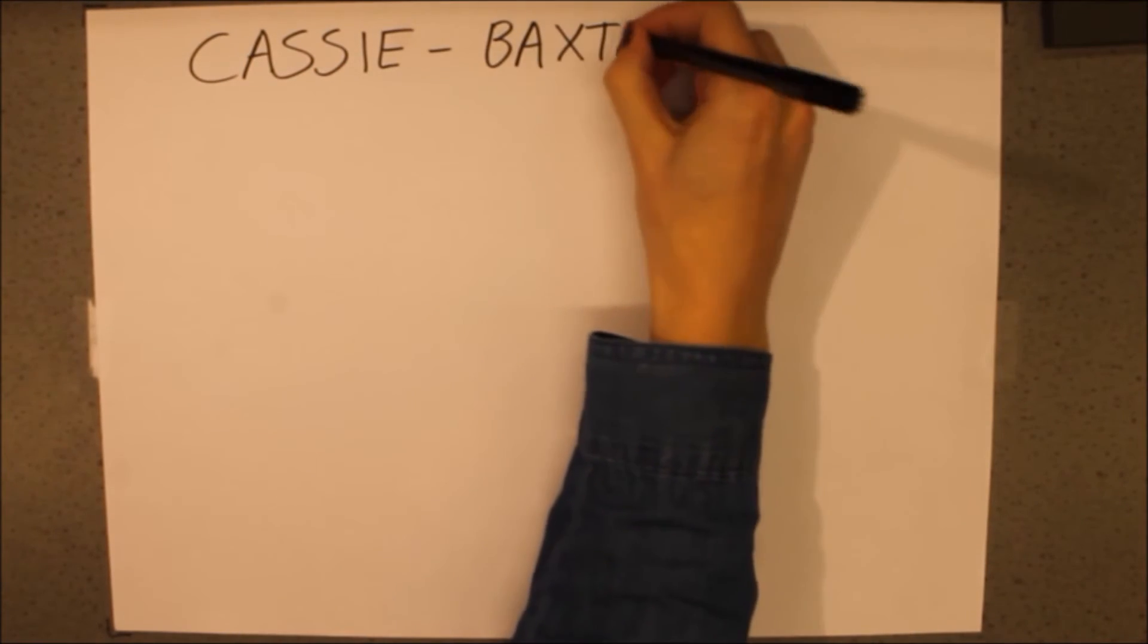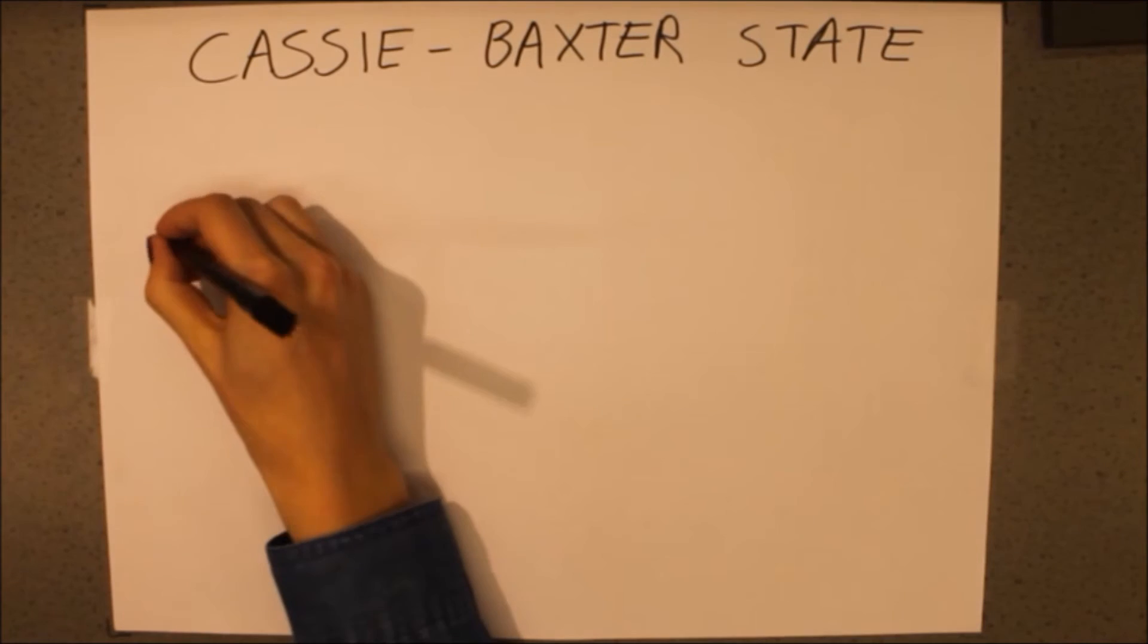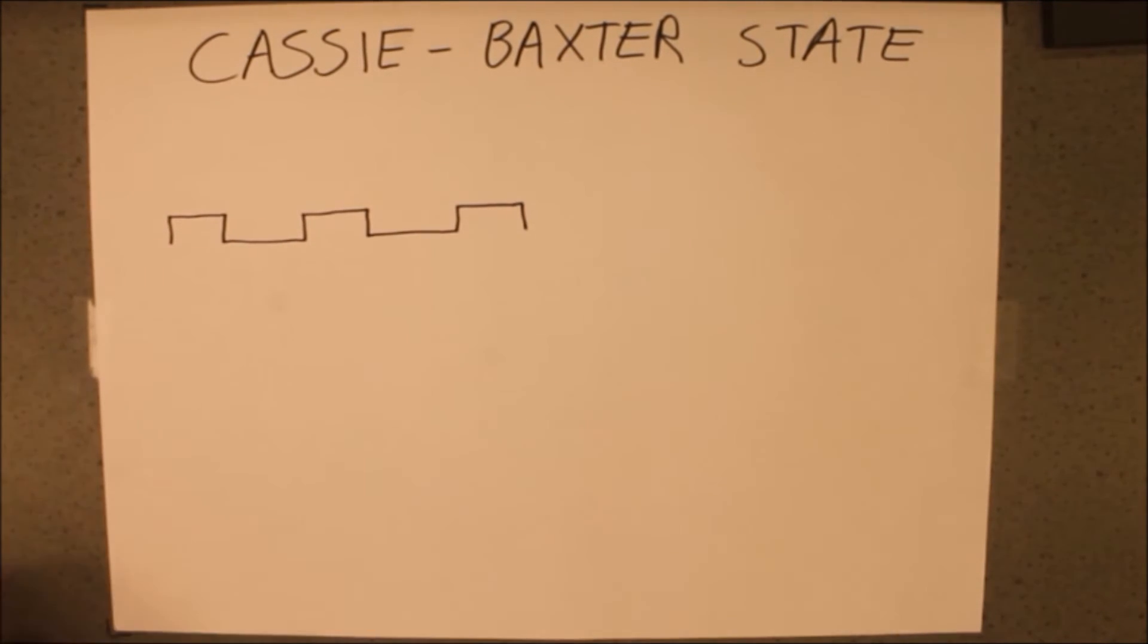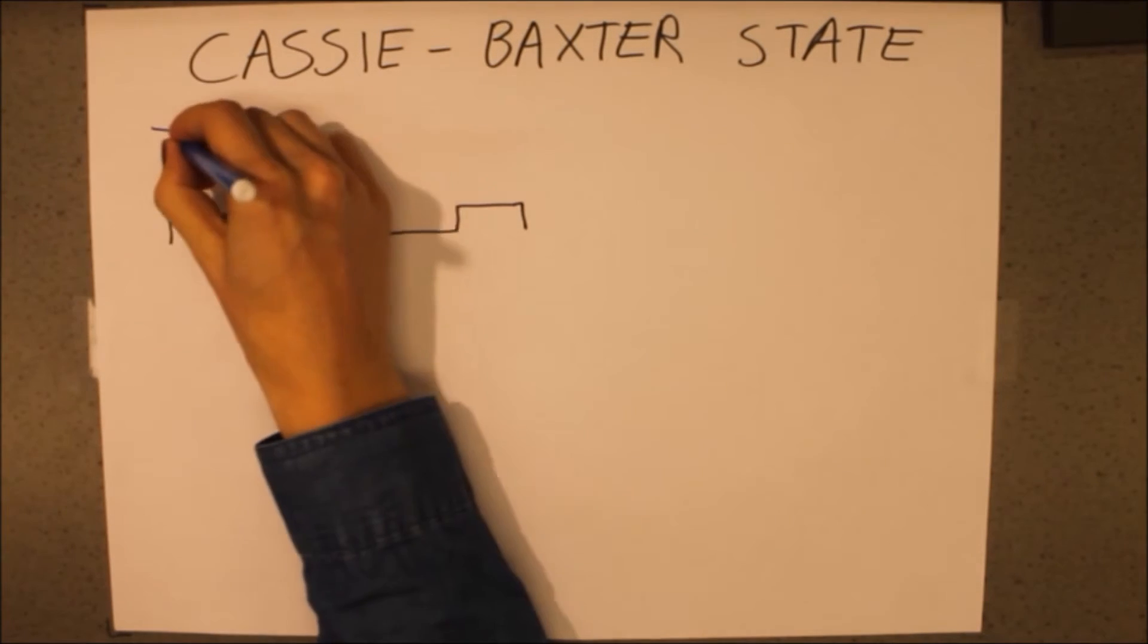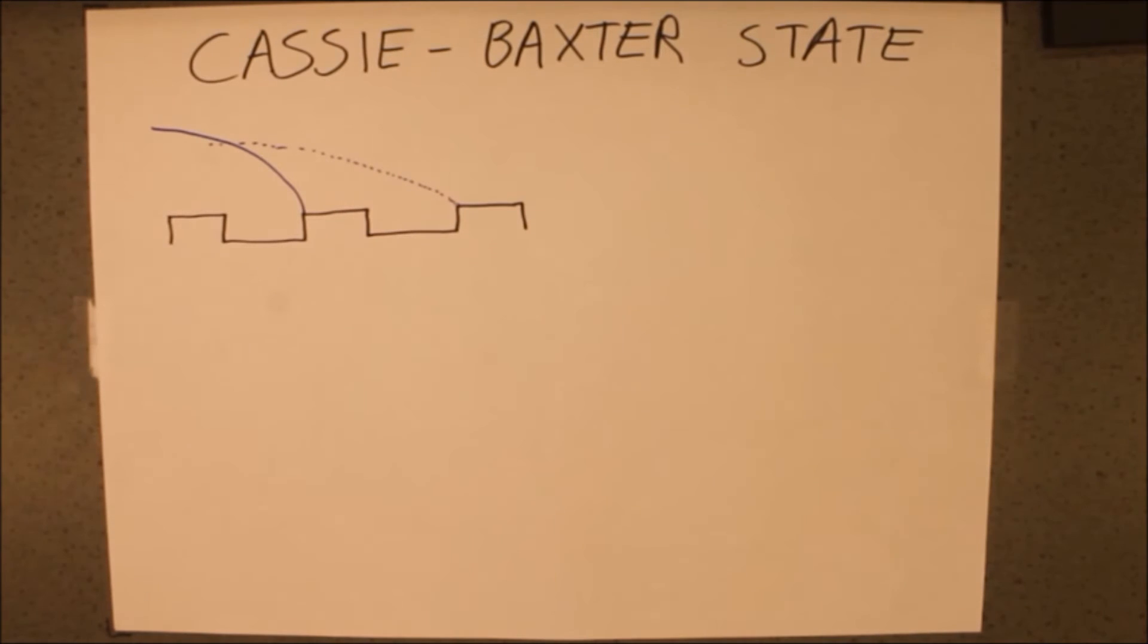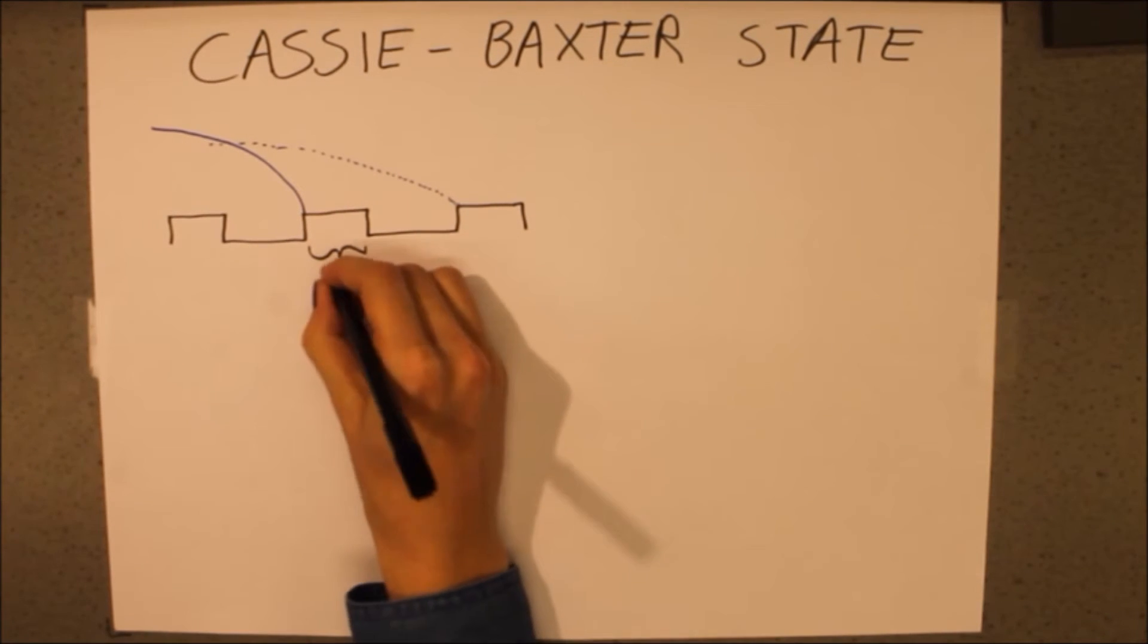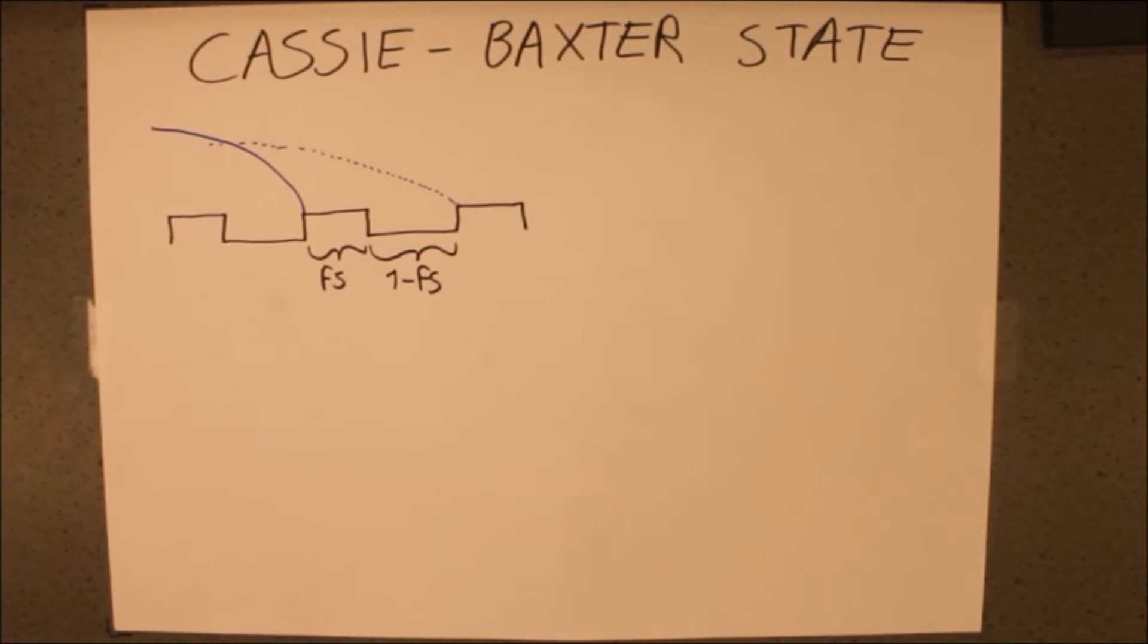Let's now look at the physics behind the Cassie-Baxter state. The water droplet now lies on top of the roughness. Therefore, there is a liquid vapor surface tension in the holes between the roughness. This leads to the change in surface, delta A, being divided into two parts.